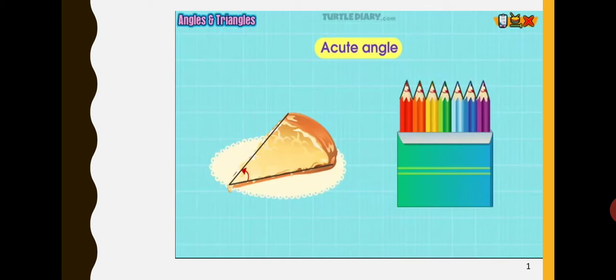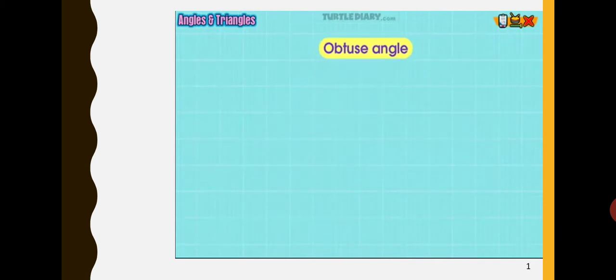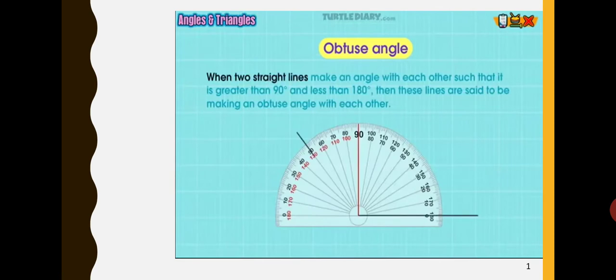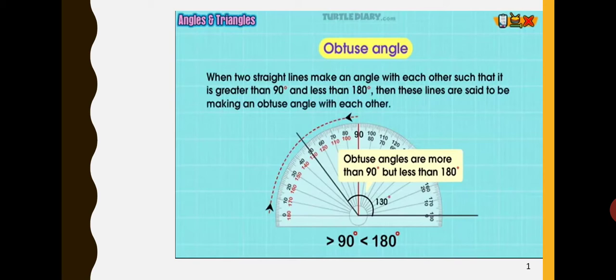Obtuse angle. When two straight lines make an angle with each other such that it is greater than 90 degrees and less than 180 degrees, then these lines are said to be making an obtuse angle with each other.